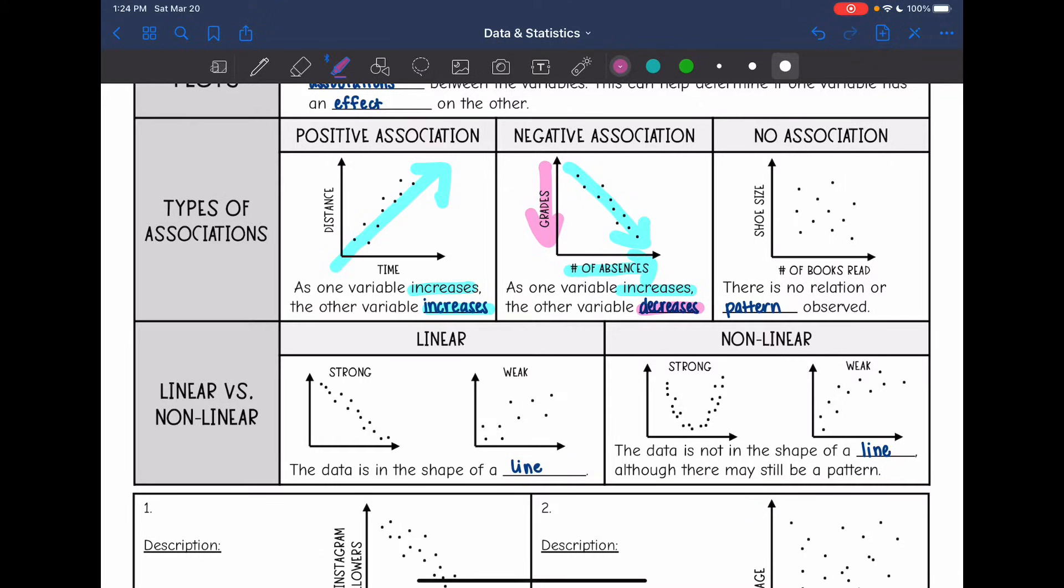Then the last one we're going to look at is no association. That's when there is no relation or pattern in the graph. It's just a hot mess.